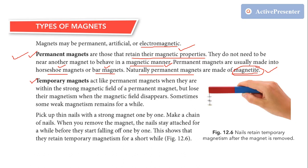Now let us talk about temporary magnets. Temporary magnets act like permanent magnets only when they are within the strong magnetic field of a permanent magnet. They act as a permanent magnet while inside that magnetic field.